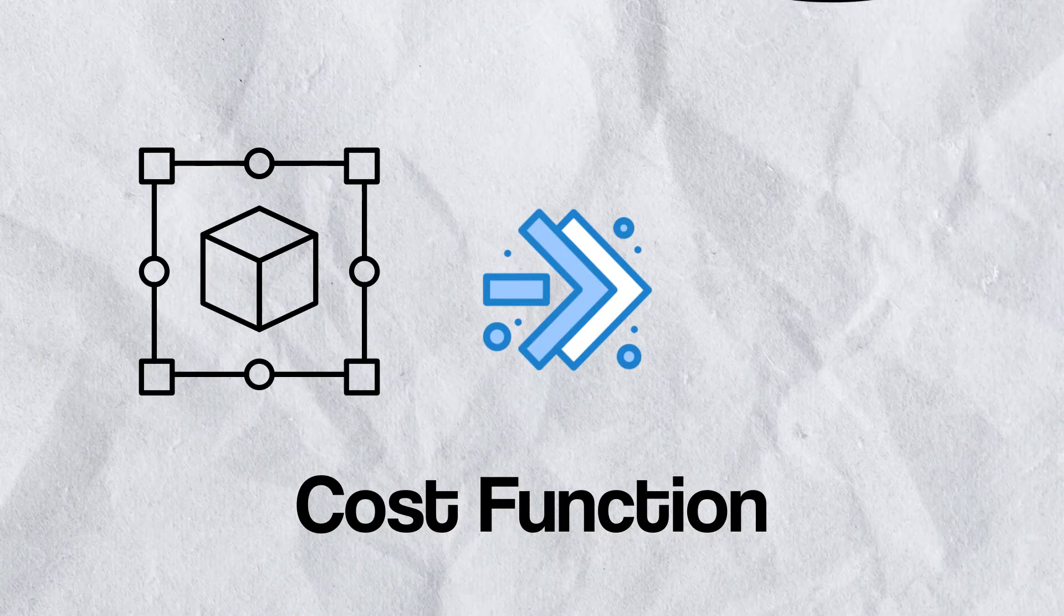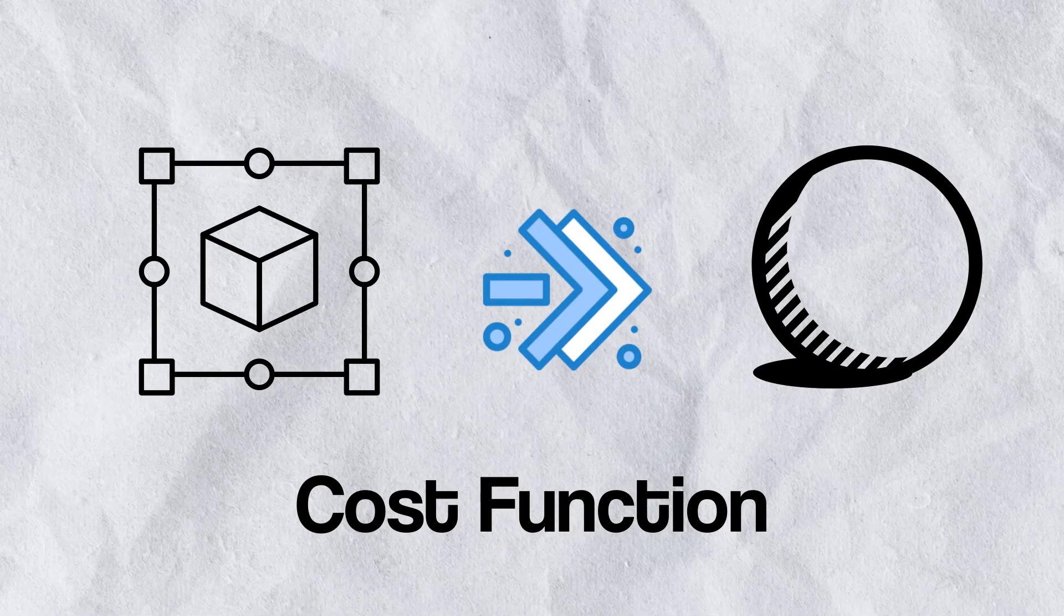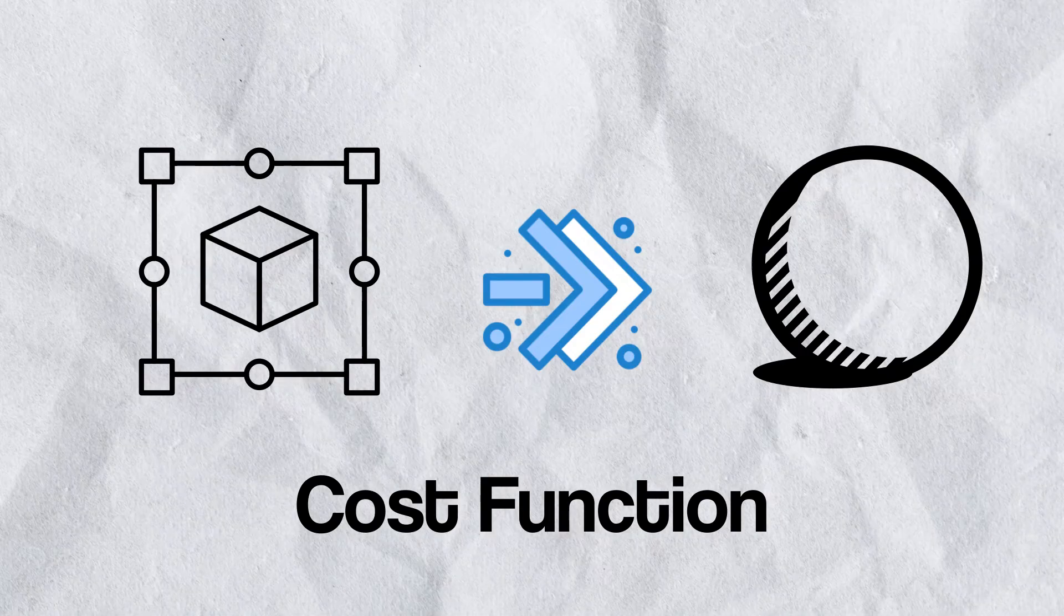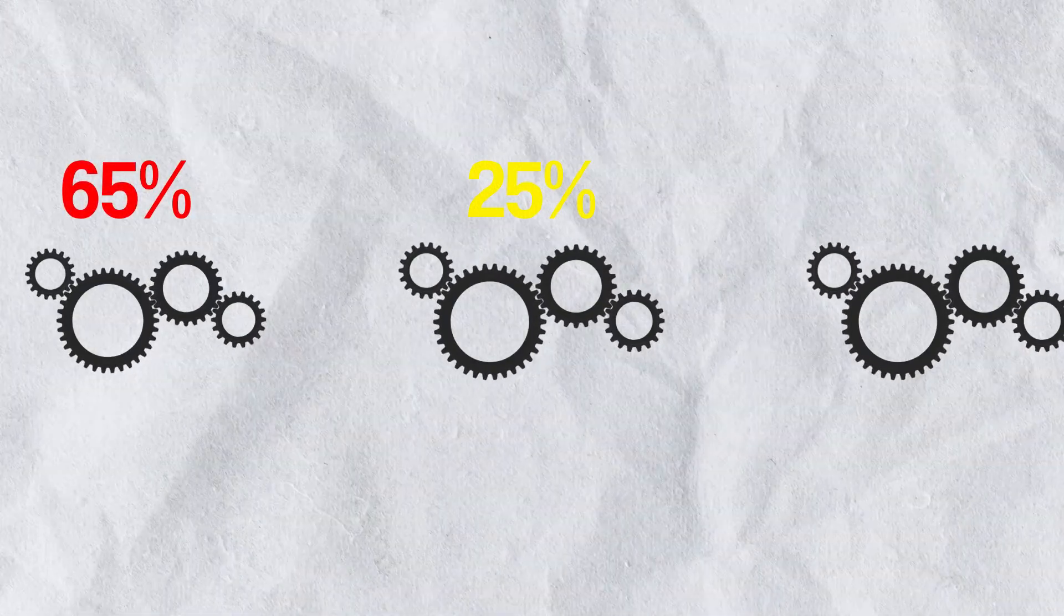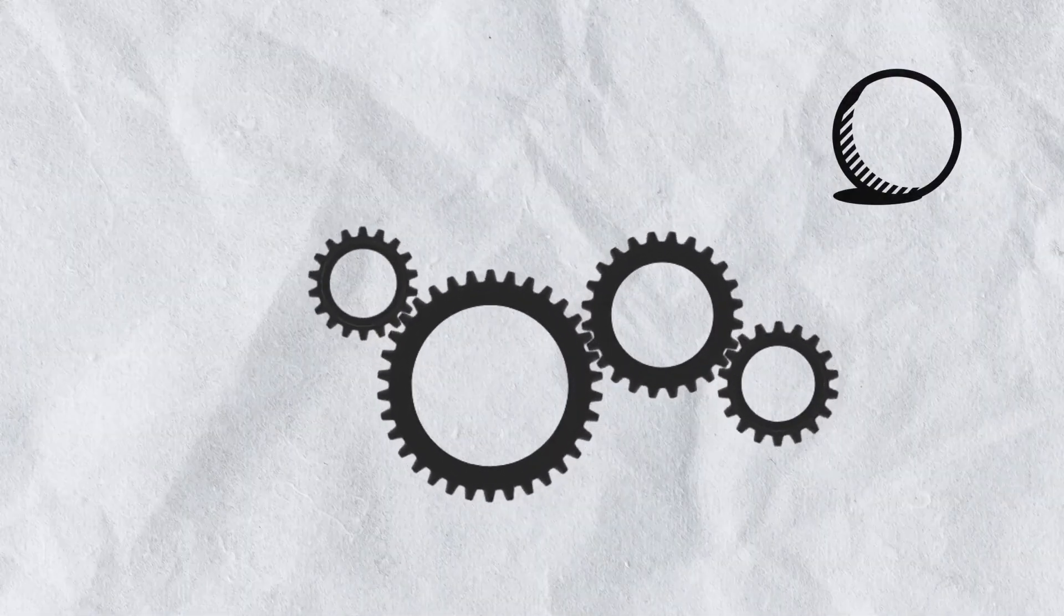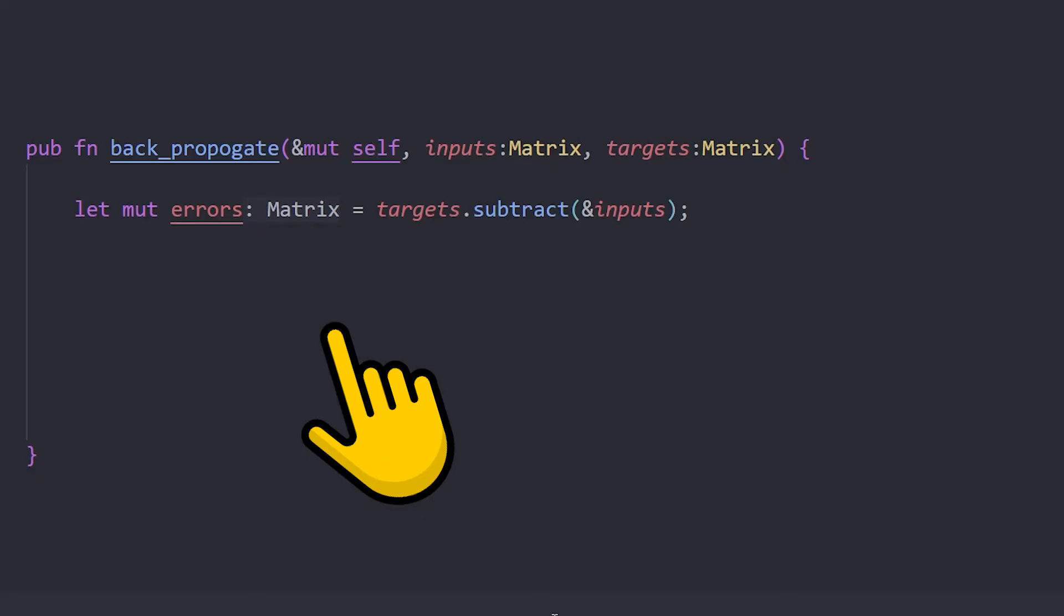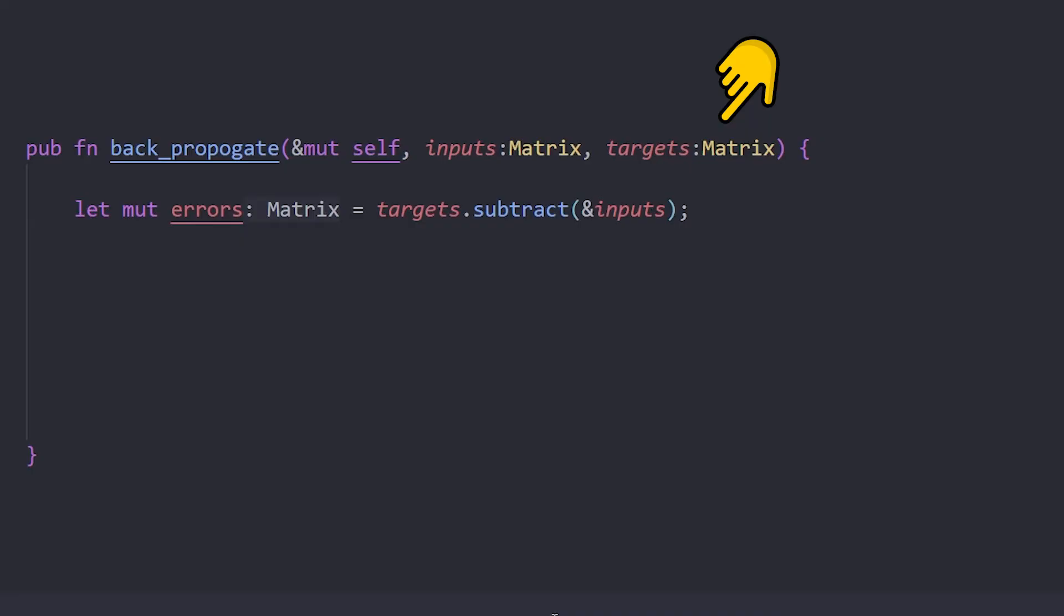Remember that backpropagation consisted of a cost function, where we compared our outputs to our target outputs. Then we compute which part of our neural network is most responsible for its current output. And finally, we update those and try it all over again. Here we have our backpropagate function. The inputs represent the output of our feed forward function. The targets represent the expected output of our neural network.